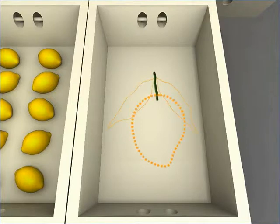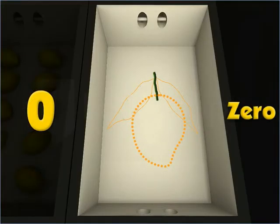However, there is no mango at the fruit stall. We say that there is zero mango, or we can use the numeral zero to represent the number of mangoes at the stall.